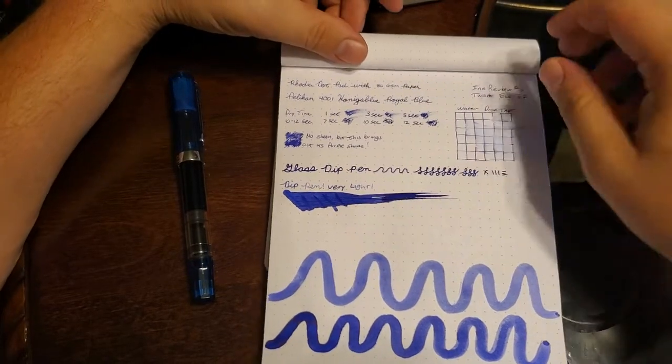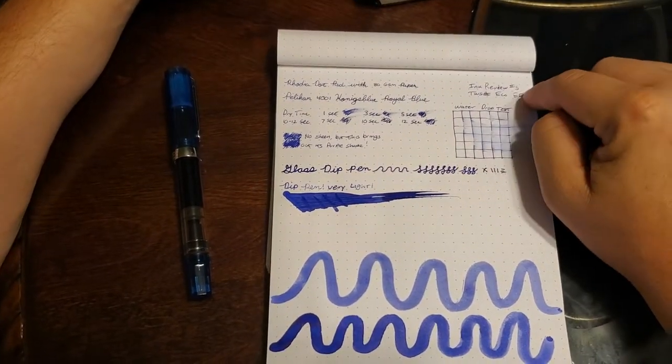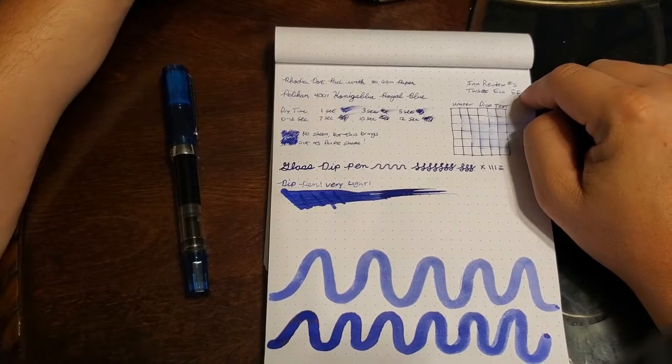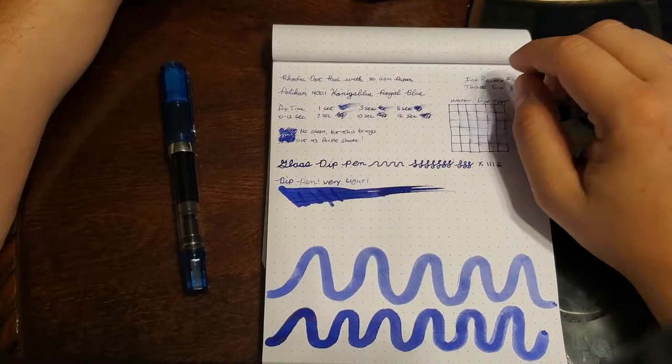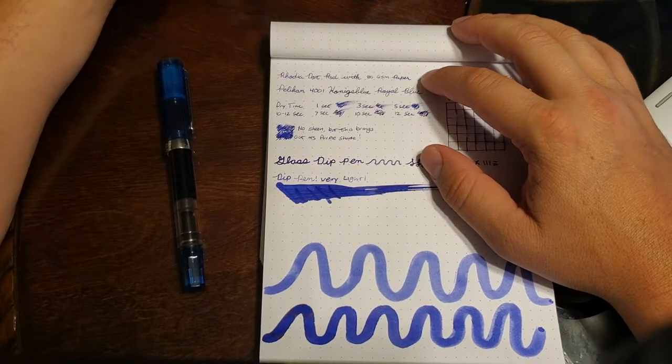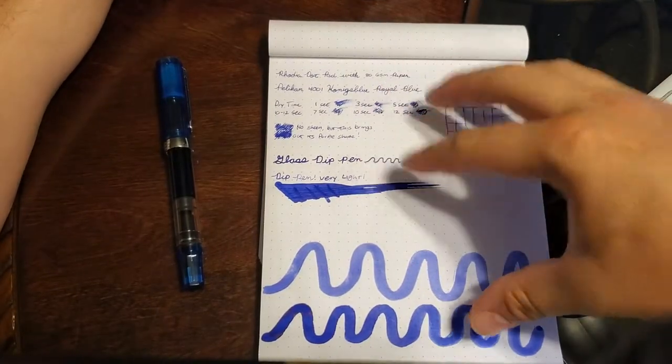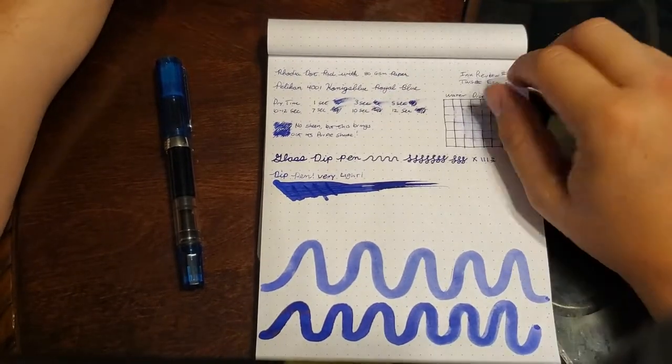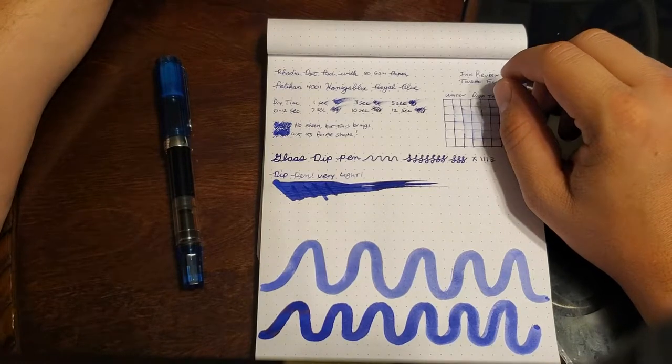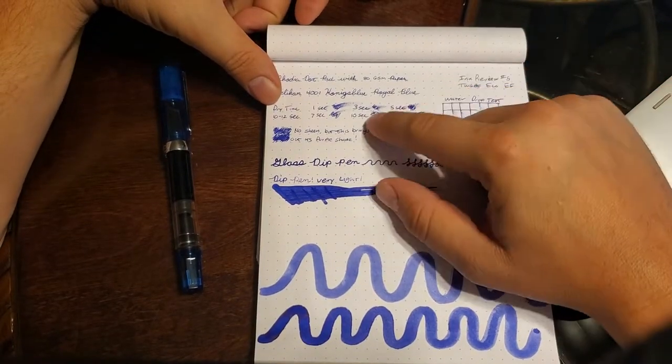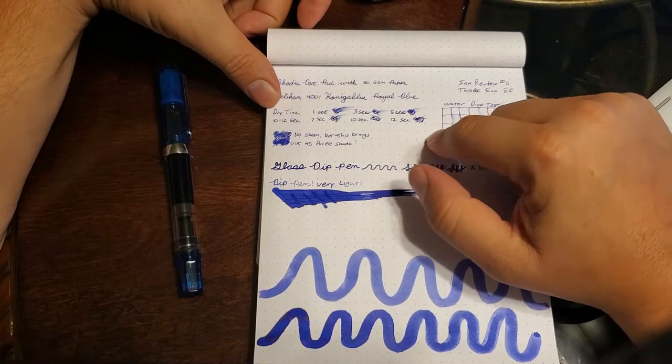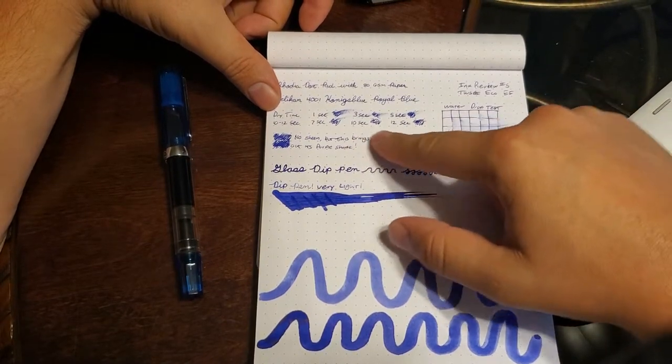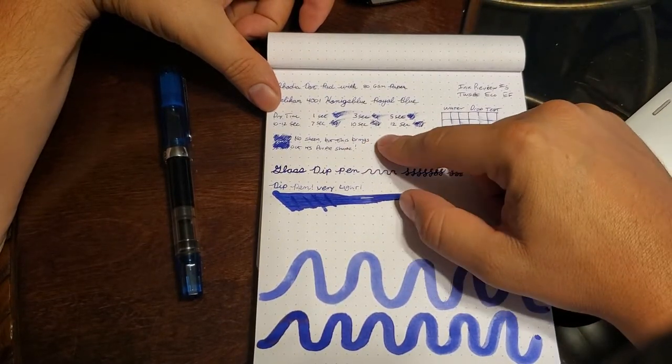So, just some of the stats on this pen. Like I said, I use a TWSBI Eco with an extra fine nib. And I've had the ink in this pen for a good couple months, so I've been able to use it quite a bit. I filled it up two, maybe three times. And this is a Rhodia Dot Pad. This is what I tend to put my ink reviews on so far. So I did a dry time test, 1, 3, 5, 7, 10, and 12. It seems to do well between the 10 and 12 second mark, which is fairly quick. Goulet Pens rated this ink as fairly quick drying if you check out their website.